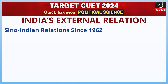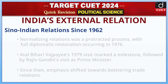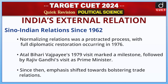Sino-Indian Relations since 1962: Normalizing relations was a protracted process, with full diplomatic restoration occurring in 1976. Atal Bihari Vajpayee's 1979 visit marked a milestone, followed by Rajiv Gandhi's visit as Prime Minister. Since then, emphasis shifted towards bolstering trade relations.